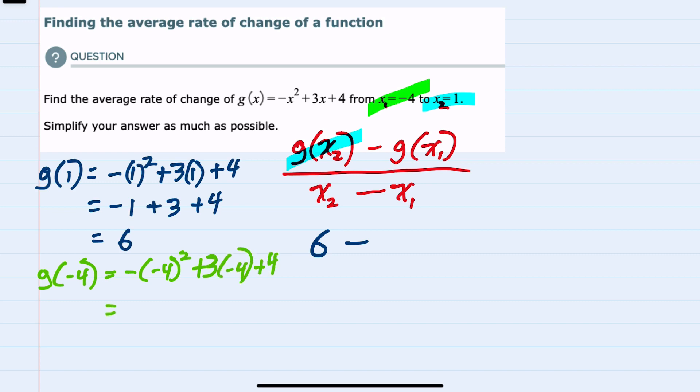Exponents first, negative 4 being squared is 16, but the other negative is still outside, and then 3 times negative 4 is negative 12, bringing down the plus 4. Simplifying here gives us negative 24.